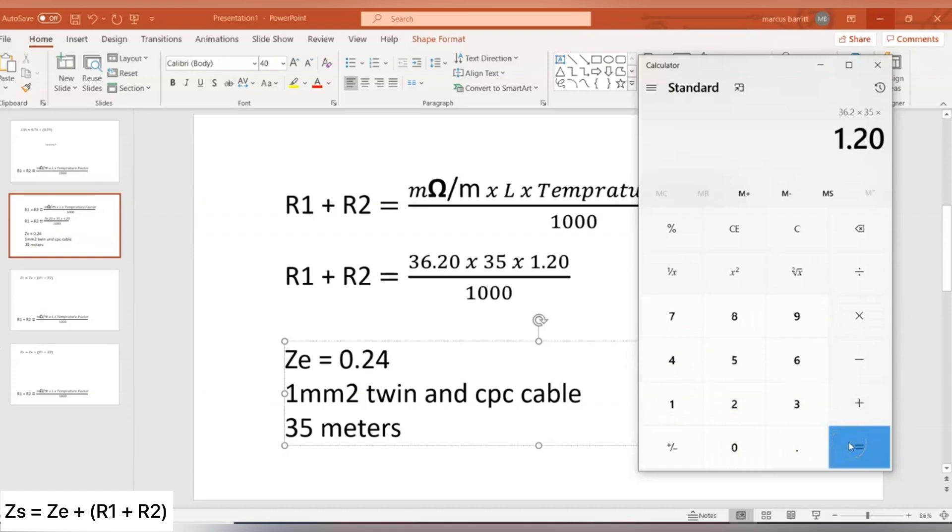The line conductor and the protective conductor, then we're going to divide that by thousands because that was our milliohm per metre, so we want to bring it back to our base value, that will give us a value of 1.52 ohms.